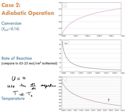Why is that? Simply because of the rate of reaction. In Case 1, the rate of reaction varied between around 65 down to 25 mole per second per cubic meter. However, in this adiabatic case, the rate of reaction decreases from around 65 mole per second per cubic meter all the way down to less than 10 — maybe 5 — mole per second per cubic meter.